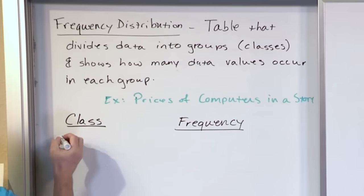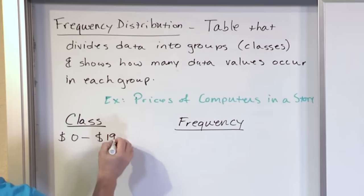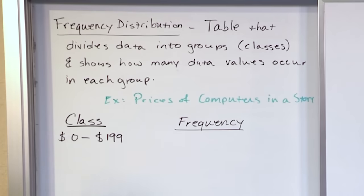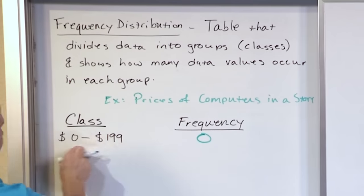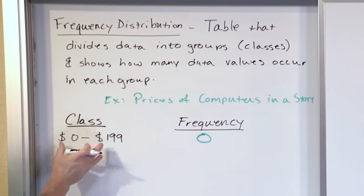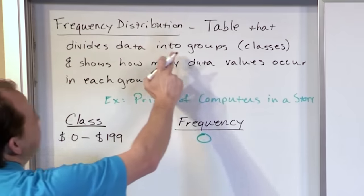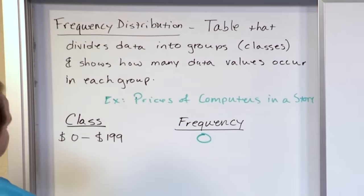Let's say we were looking in a store in the price range of $0 to $199 for computers. We find that the number of models in that range is zero, because that's awfully cheap — there are no computers in the price range of $0 to $199. This range is called a class, a group. Notice the definition: this is a table that divides the data into groups called classes. So this class is from $0 to $199.